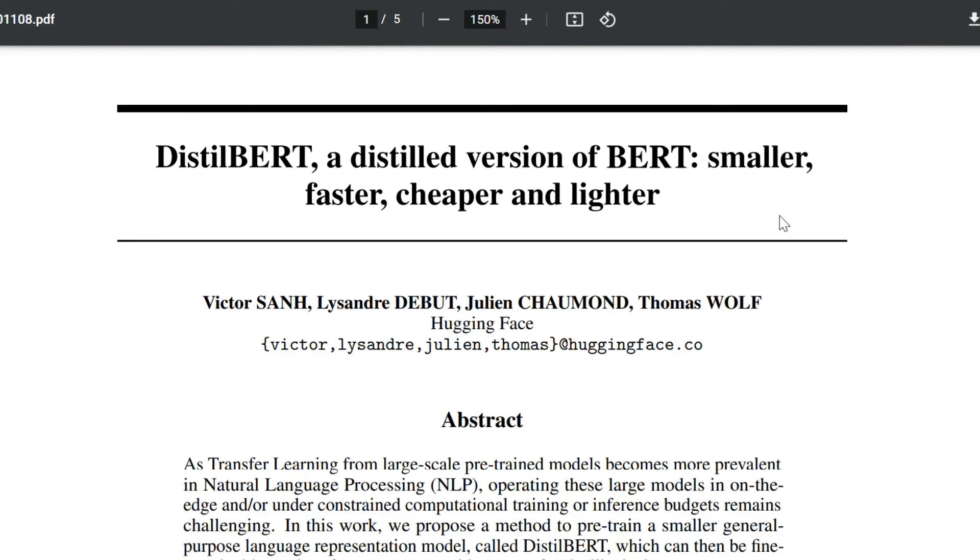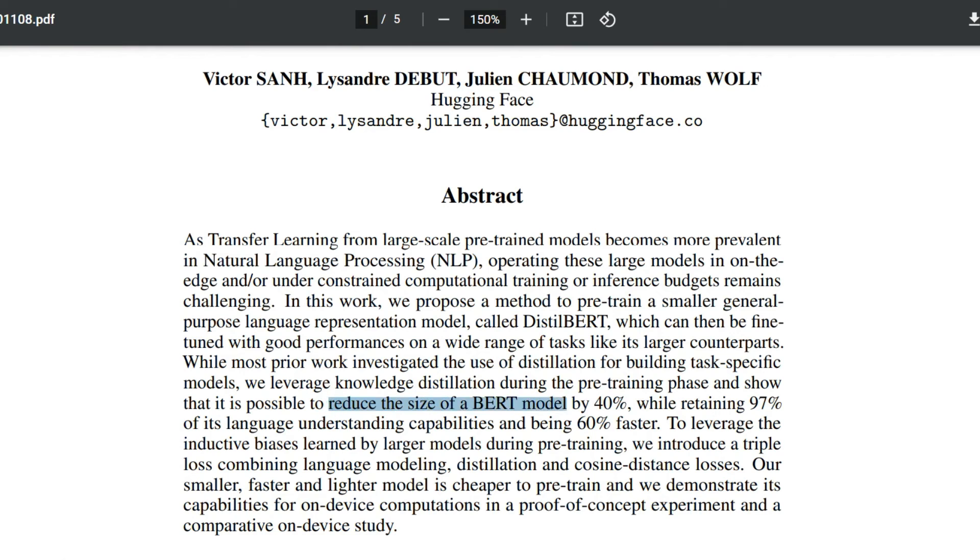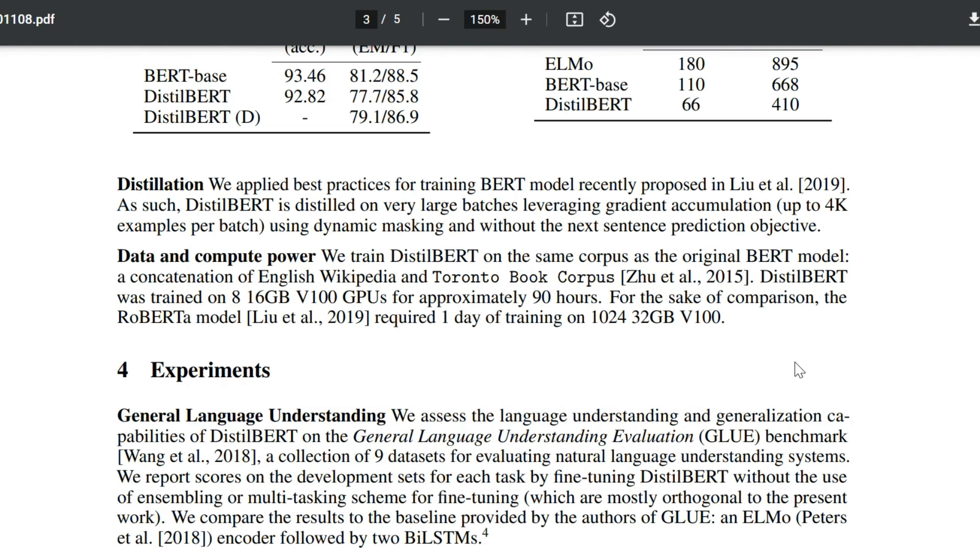Here is one example. DistilBERT is a model trained with knowledge distillation where BERT is the teacher model. In this model, they reduce the size of the BERT-based model by 40% while retaining 97% of its accuracy. And their authors tell us how many GPUs and for how long they had to train this model. DistilBERT was trained on 8 GPUs for about 90 hours, so in total about 700 hours of GPU time. In comparison, the RoBERTa model, which is similar to the BERT model, required one day of training on a thousand GPUs, which is about 24,000 hours of GPU time, or around 20 times bigger.